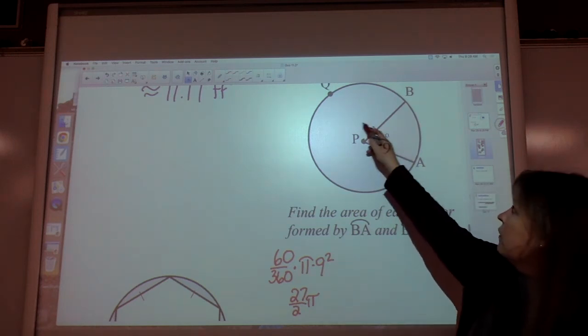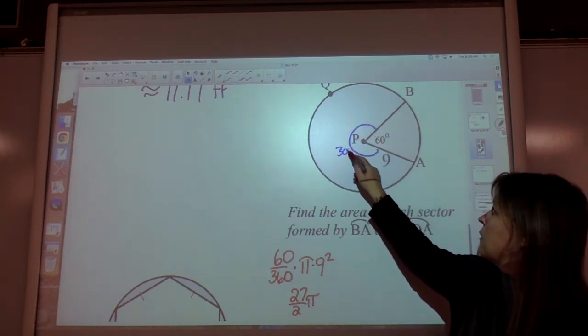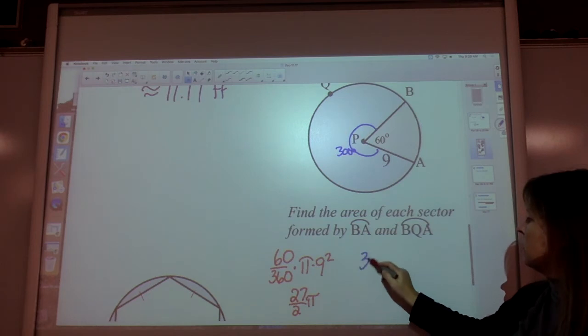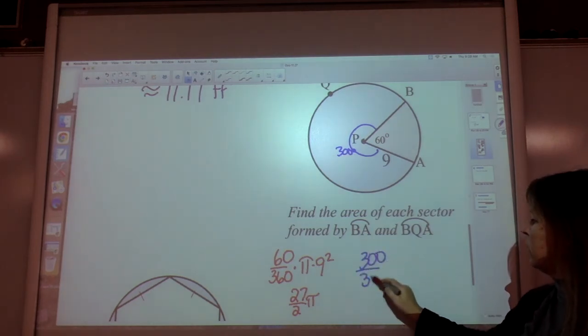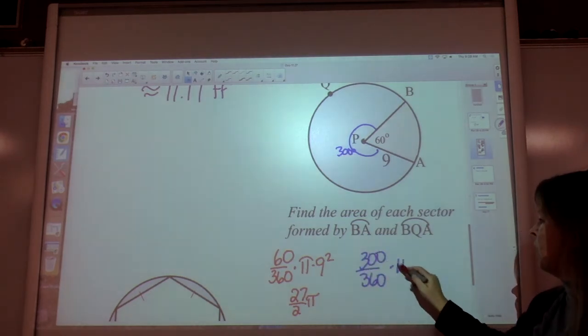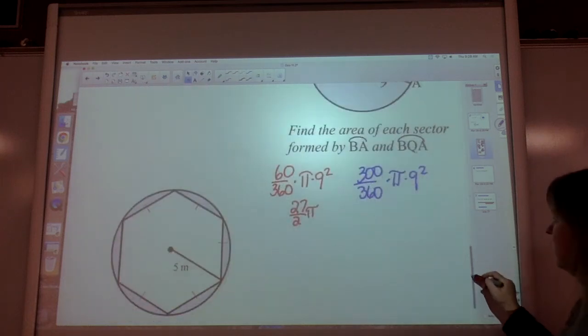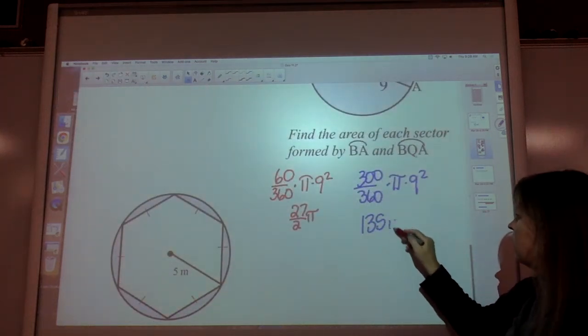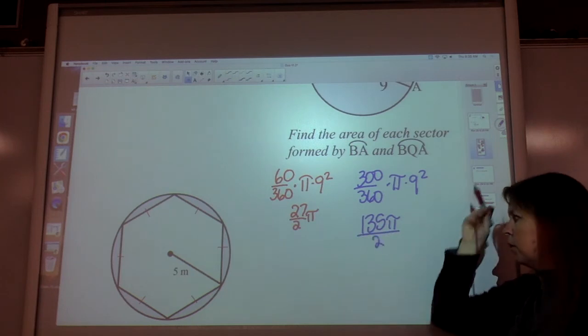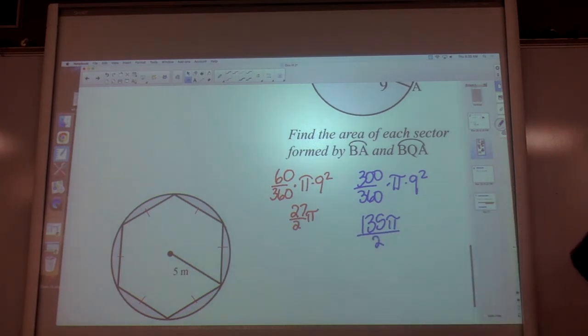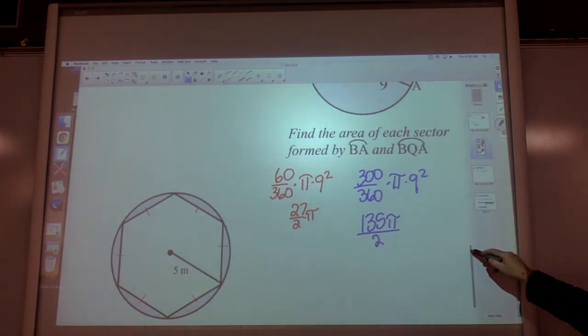That's the small one. The big one, if that's 60 degrees, this must be 300 degrees. 300 over 360 times π times radius of 9². And you get a fraction of 135 over 2, or 135π over 2. If you needed the decimals of those, calculate them out.